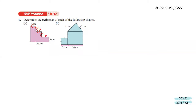Since we know the whole length over here and these tiny parts, we can find the value of x, which means that x equals to 20 minus 6 minus 6. So that will give us 8 centimeters.